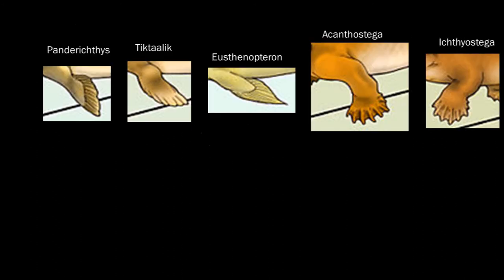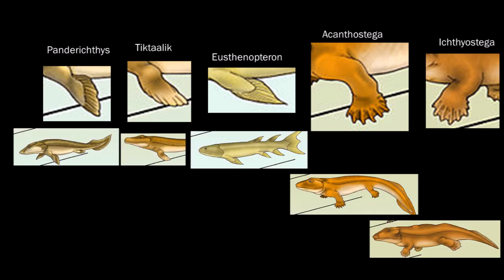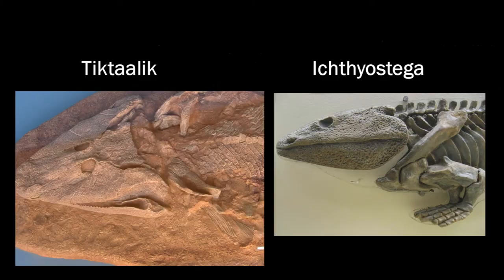Let's see how we did. We put Eusthenopteron in the middle, but that one should have been in front. Wait — so the one with the least bones is number two? Well, that didn't work out. Let's go back to the fossils.